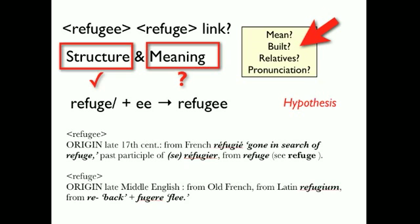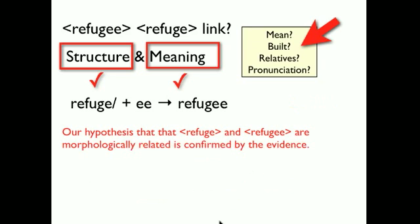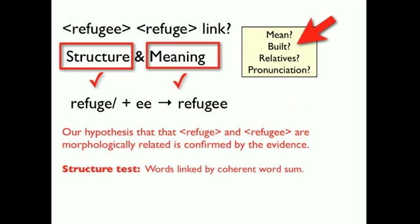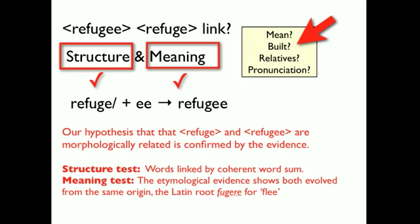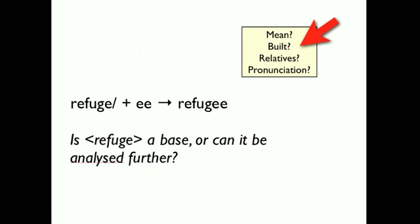That means we need to look at the meaning. I hopped over to my dictionary, and we already did that, and we saw this. They drew the link in the first place to refuge and this underlying Latin root for to flee. So we actually already have done this. Our hypothesis was past the structure test, words linked by a coherent word sum, and the meaning test. The etymological evidence shows both evolved from the same origin, the Latin root for flee.